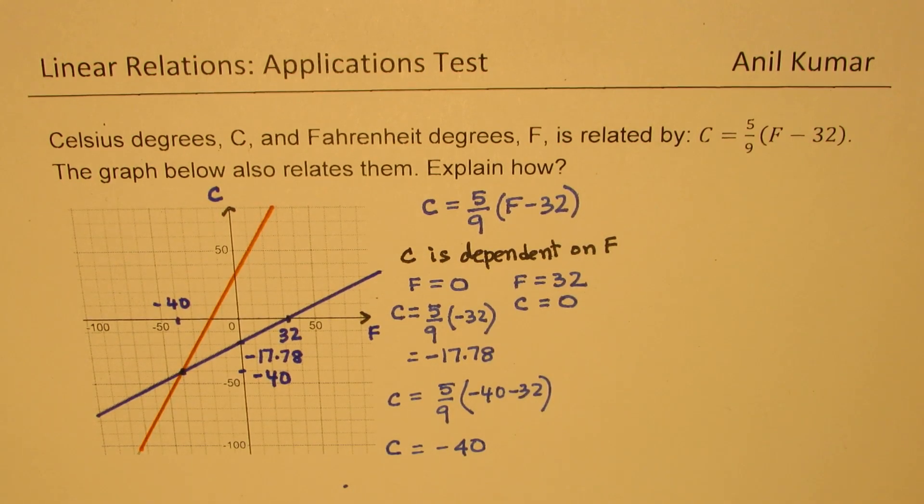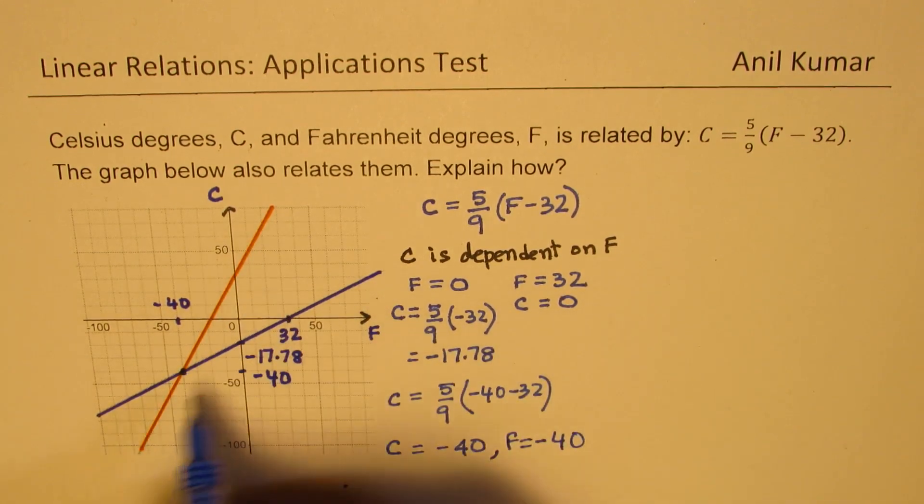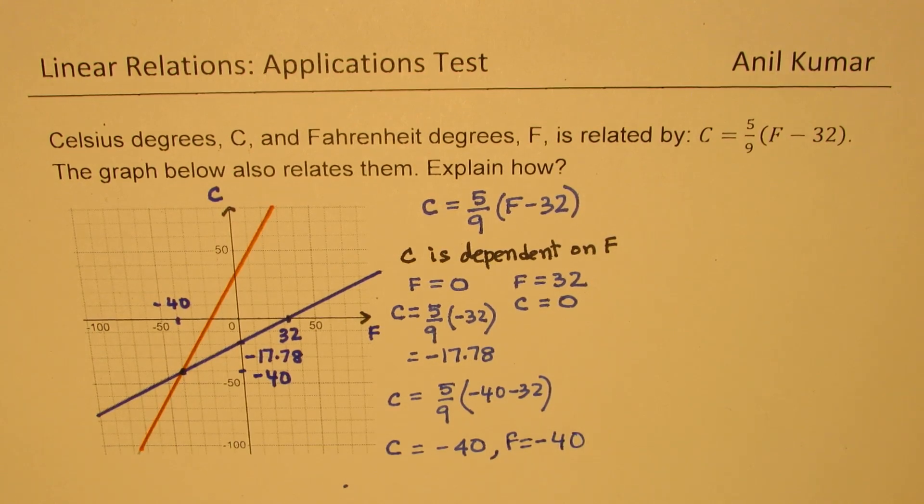That is a very important point on this graph, which says that minus 40 degrees Fahrenheit is same as minus 40 degrees Celsius. This is the temperature which is same for both. C is minus 40 and F is also equal to minus 40. So that point is same on both these graphs.